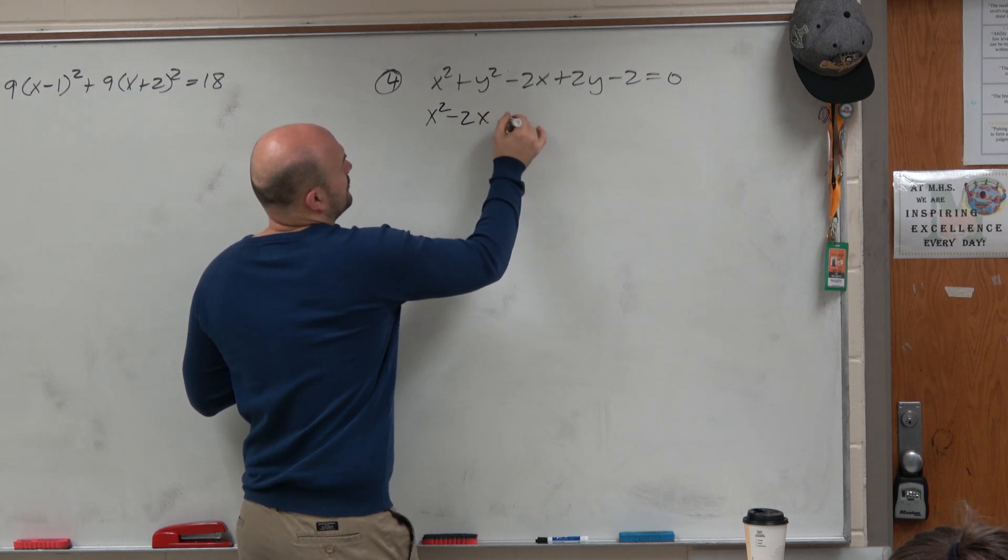But we can only complete the square when our terms are collected the same. So I'm going to group the x's and I'm going to group the y's. And then we can just throw the constant to the other side.